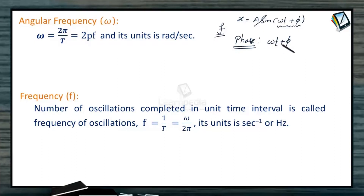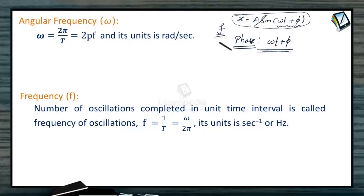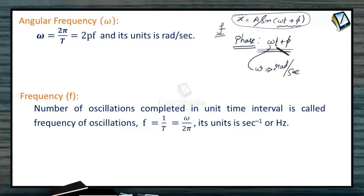Phase is a linear function of time. Whenever there is a change of 2 pi in phase, the motion will be repeated — as we know from the character of the sine and cosine functions. This angle's unit is in radians, so omega's unit must be radians per second, so that omega times t gives radians.